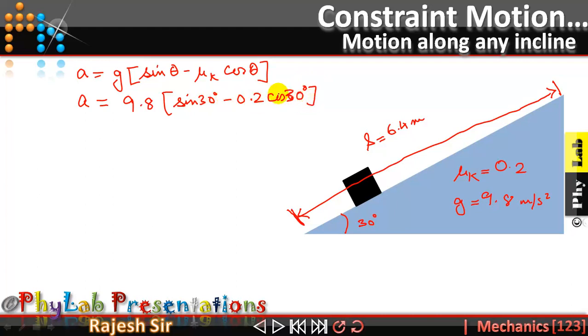Now when you are going to solve this, this acceleration comes out to be 3.20 meter per second square from solving.